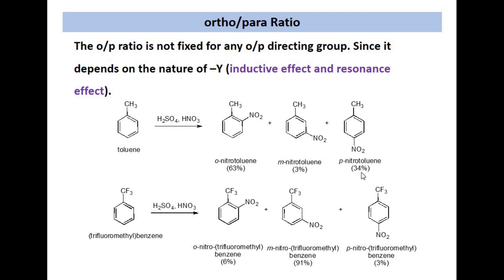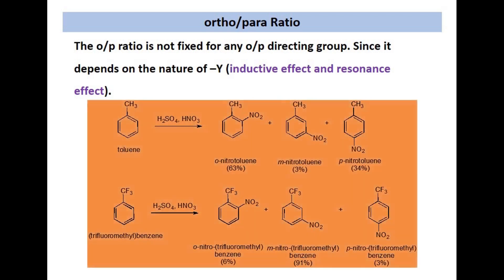Ortho-nitrotoluene and para-nitrotoluene together account for about 97% of the product, and meta-nitrotoluene is only 3%. Similarly, when we consider trifluoromethylbenzene, this group is deactivating in nature and makes benzene less reactive. The ortho-nitro and para-nitro products together are only 9% — 6% ortho and 3% para — while meta-directing is the major product. The meta-directed product is higher when there is an electron-withdrawing group bonded to the benzene ring.